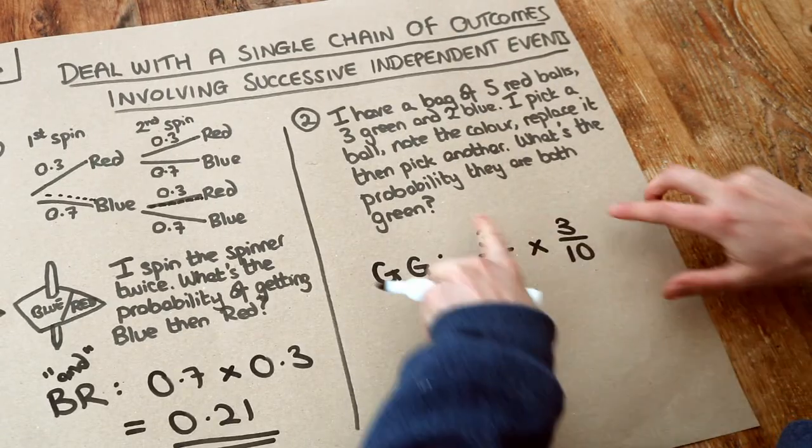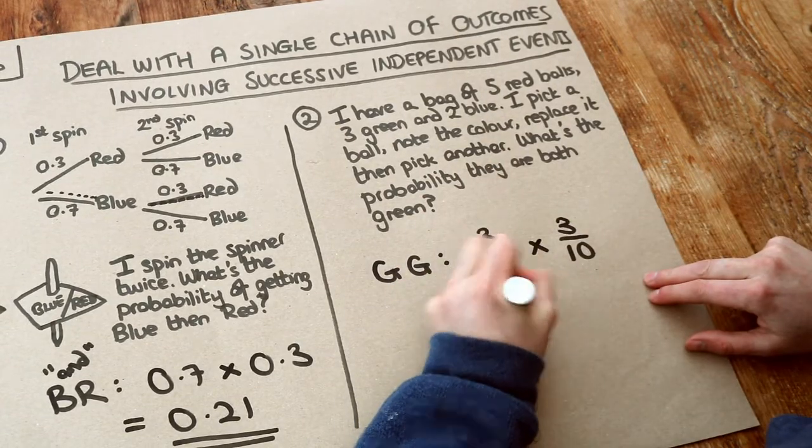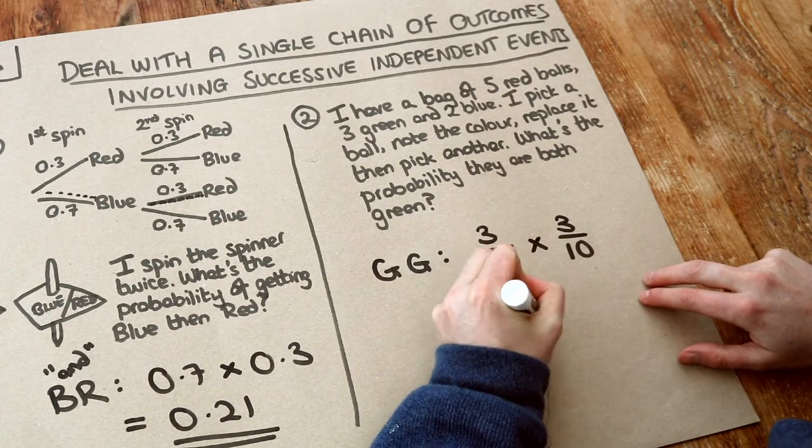And when we times these fractions together, we just times the numerators together and we times the denominators together. So it's nine over hundred or if you prefer, 0.09.